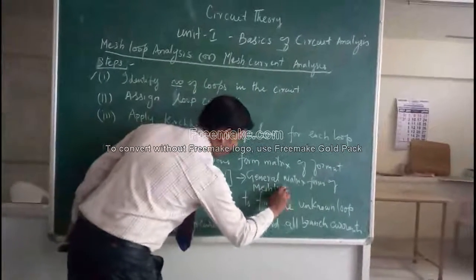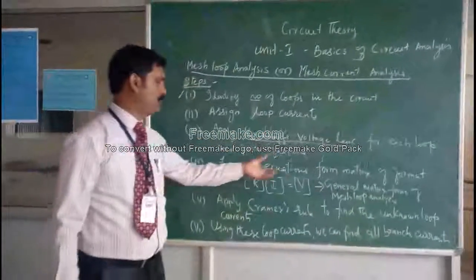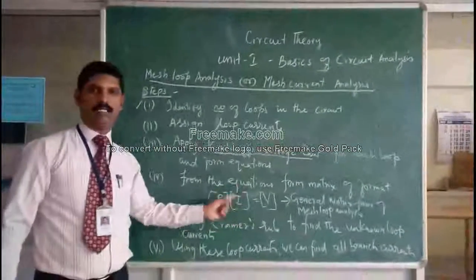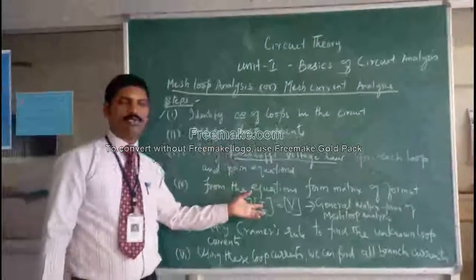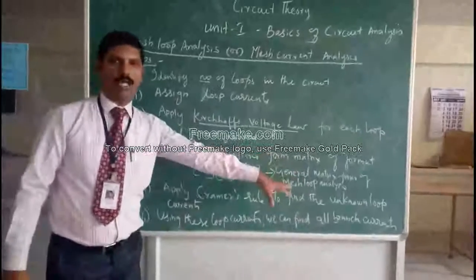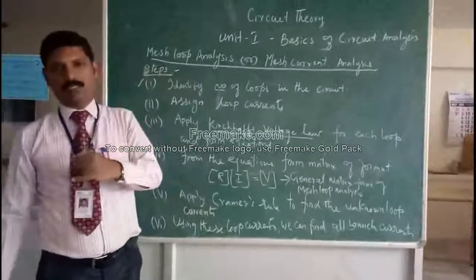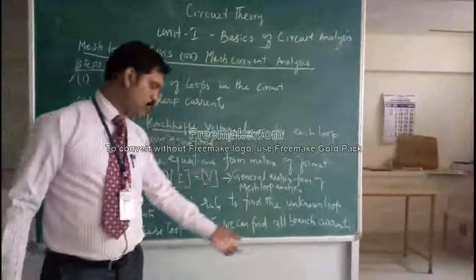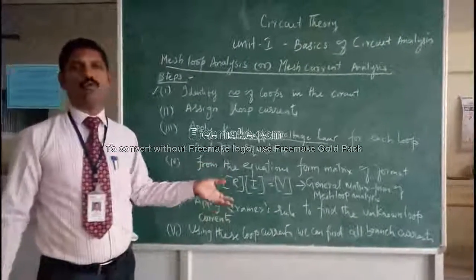Once you bring it into matrix format, you can solve for the unknown currents I1, I2, I3 using Cramer's rule. Once you know the unknown loop currents, the last step is to find the branch currents. Once you know the current in each branch, you can find voltage drops across each component and also the node voltages.